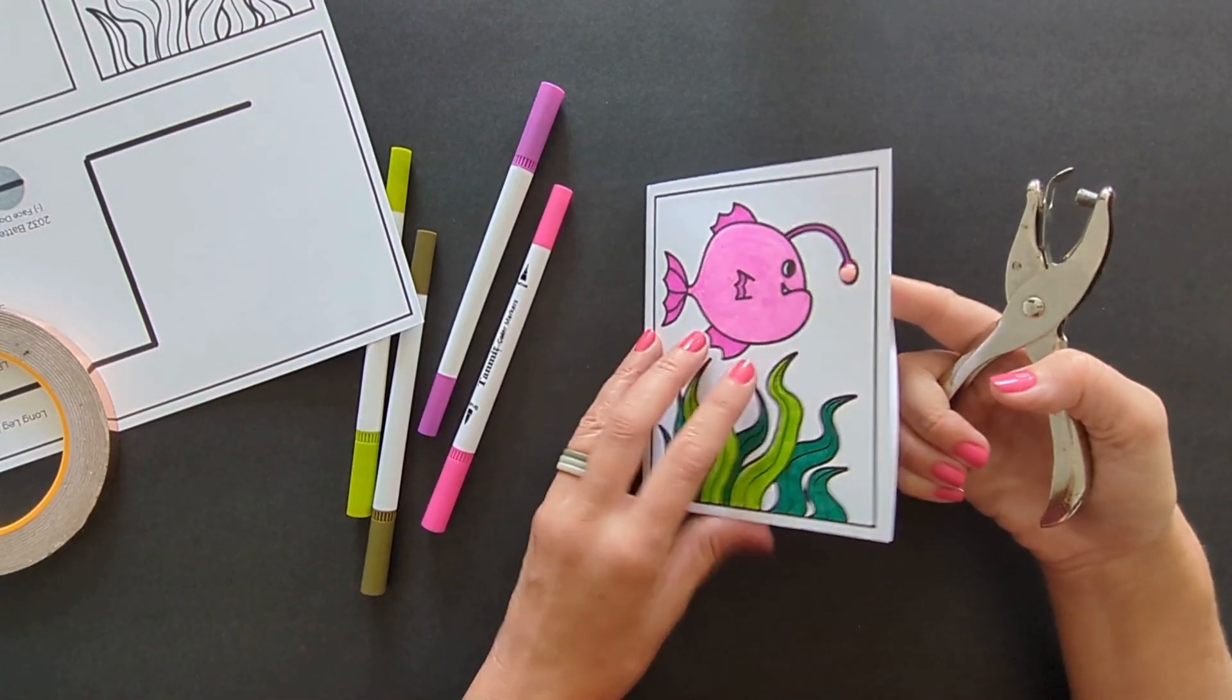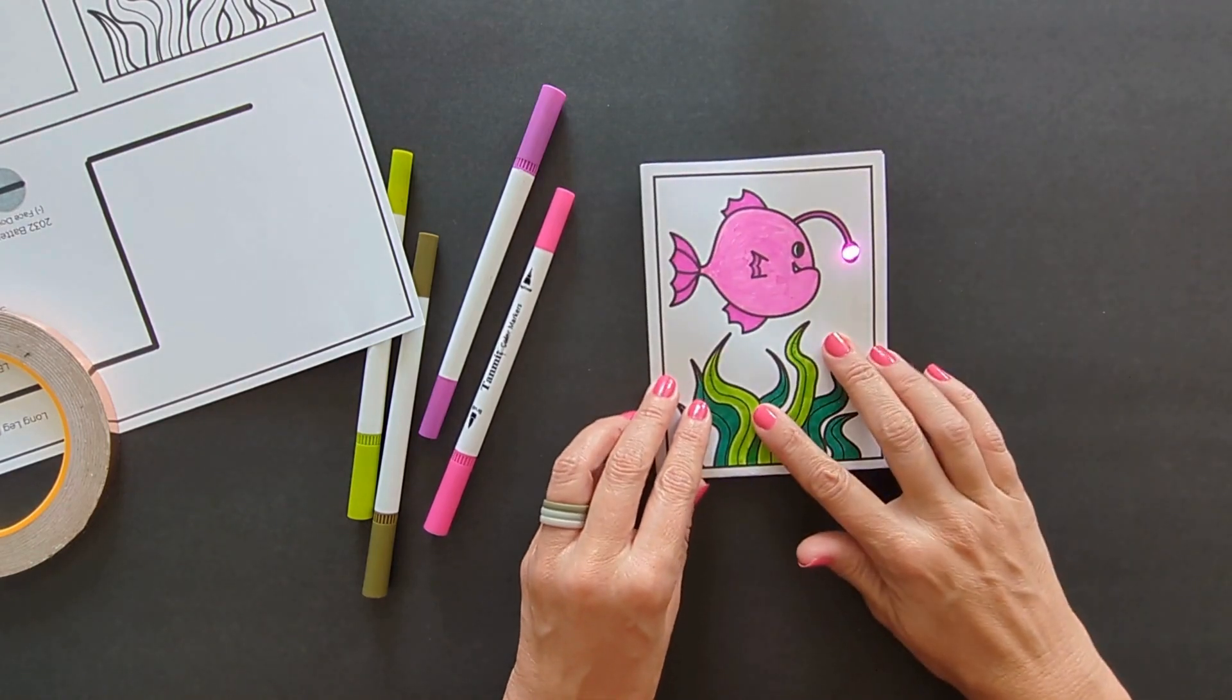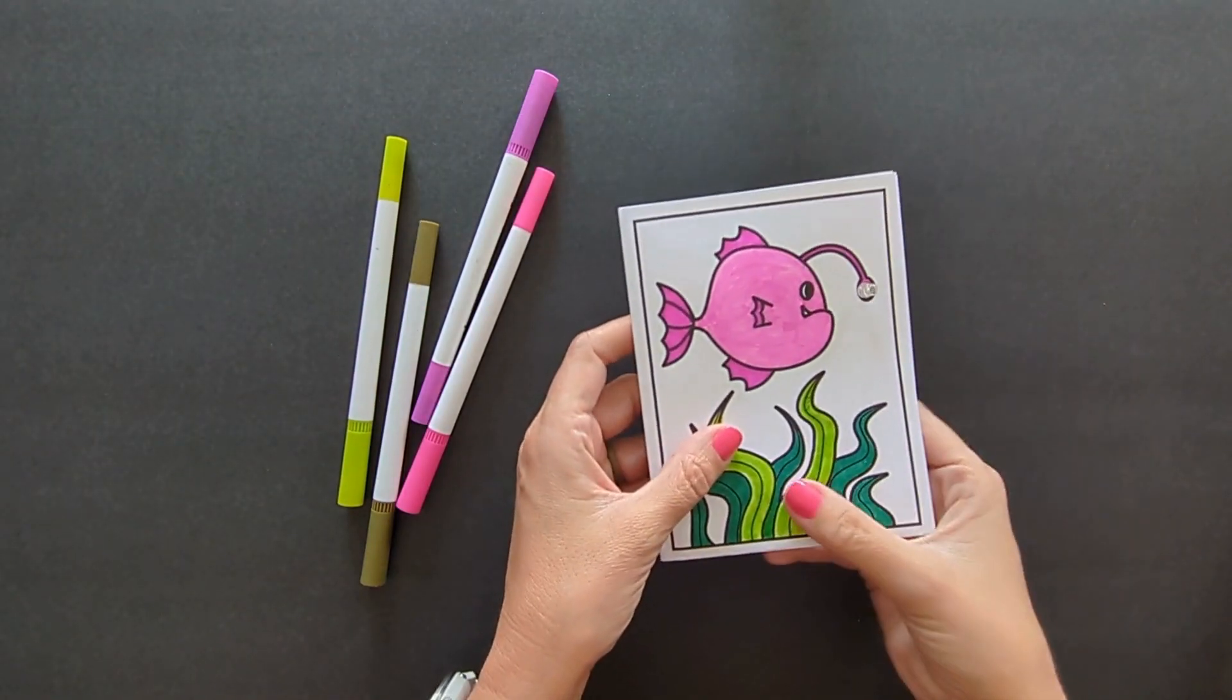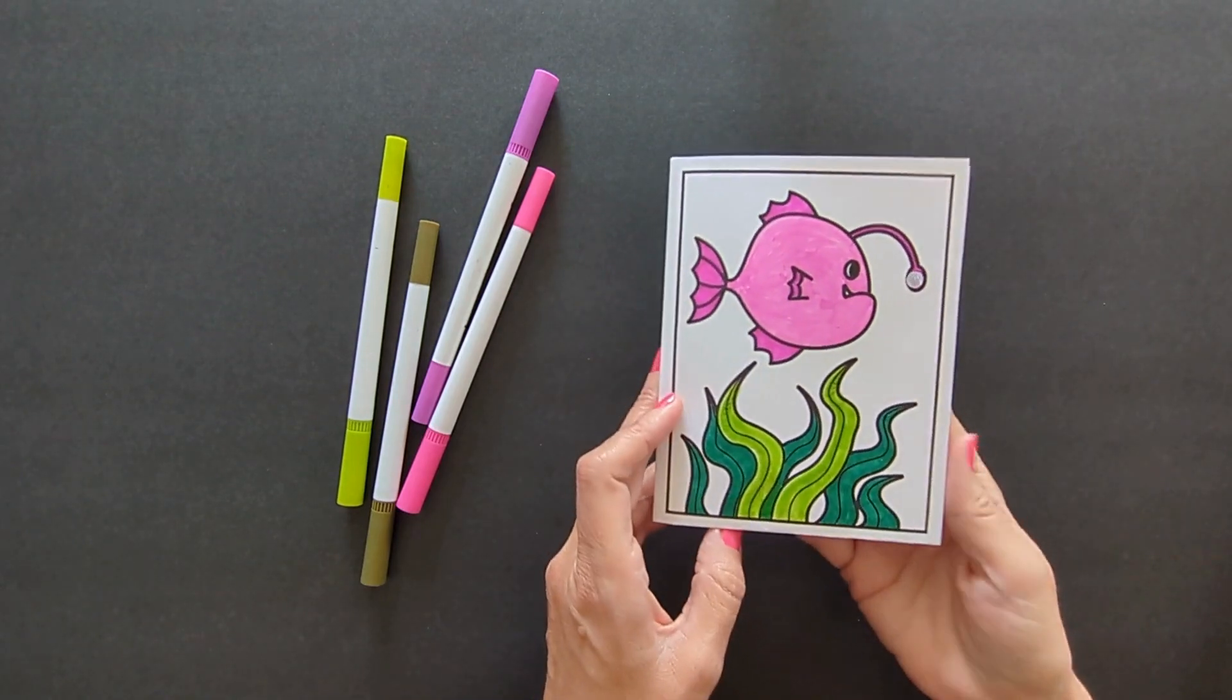The last step is to hole punch a place for the LED light to come through. Now your anglerfish will have its glowing lure. Make adjustments to the fold placement if needed and voila! You've now created a light up anglerfish card.